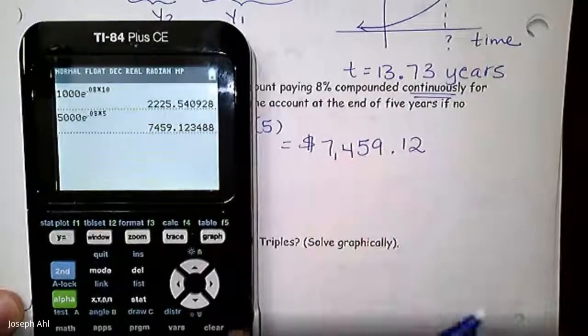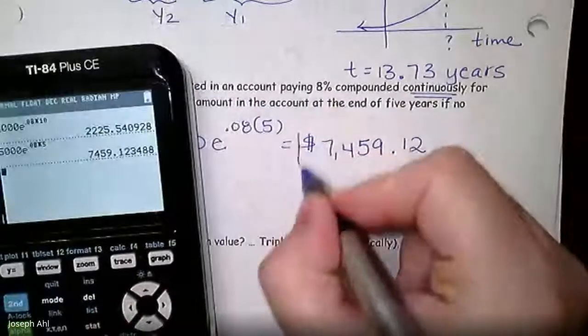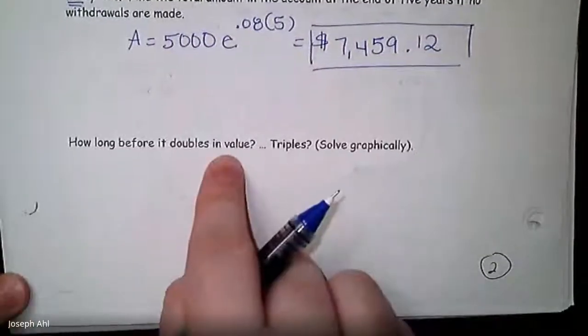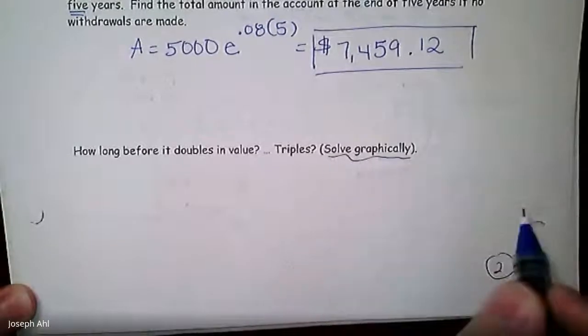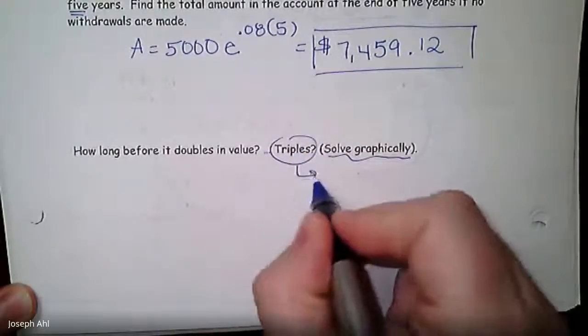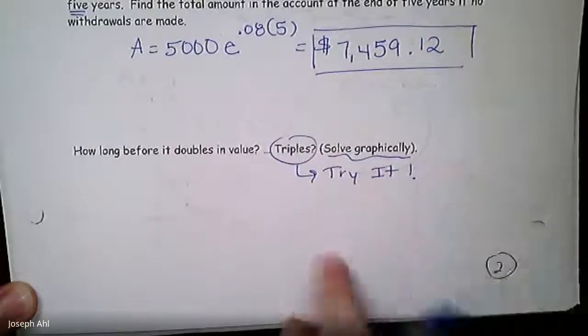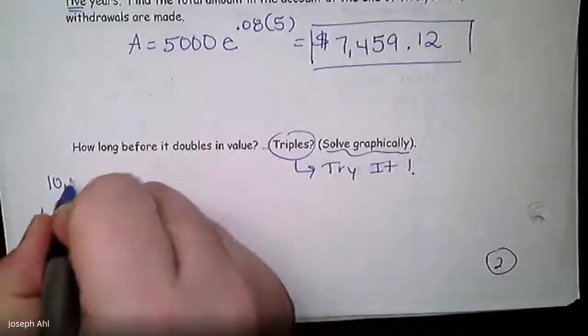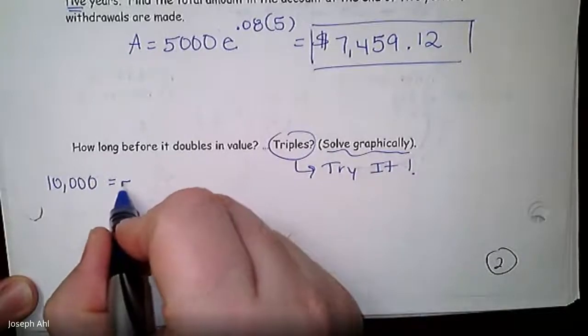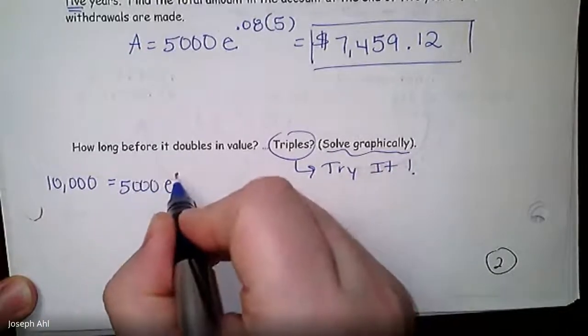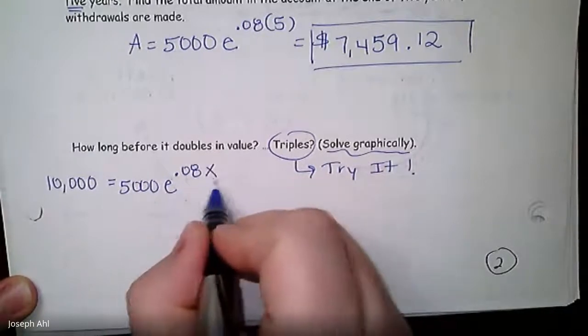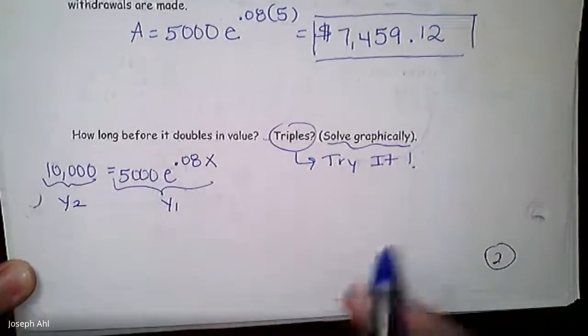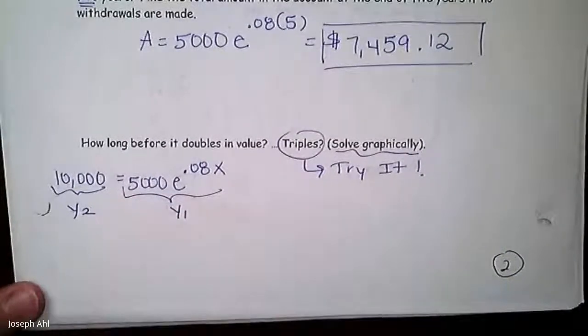So the question is, how long before it doubles and how long before it triples? I'll just do the doubles with you just to make sure we're okay with the graphical solution here. And then I'll let you try the triples. But for doubles, what are we looking for? Well, the initial investment was $5,000. So I want to know when does it double to reach 10,000. So that's going to be 5,000e^(0.08x). I don't know how much time it takes. That's what we're solving for. So we've got to do Y1, Y2 again. And we'll also think about adjusting the window to make sure we see that point of intersection.